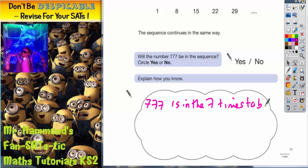And it's an easy one to spot because they're all 7s. In the same way that 888 would be in the 8 times table, 999 would be in the 9 times table, 353 would be in the 3 times table. So 777 is in the 7 times table.